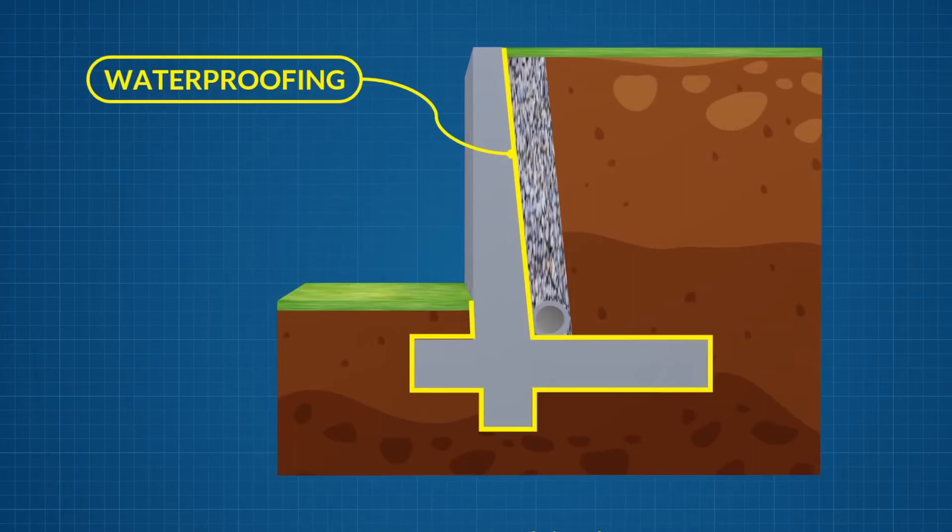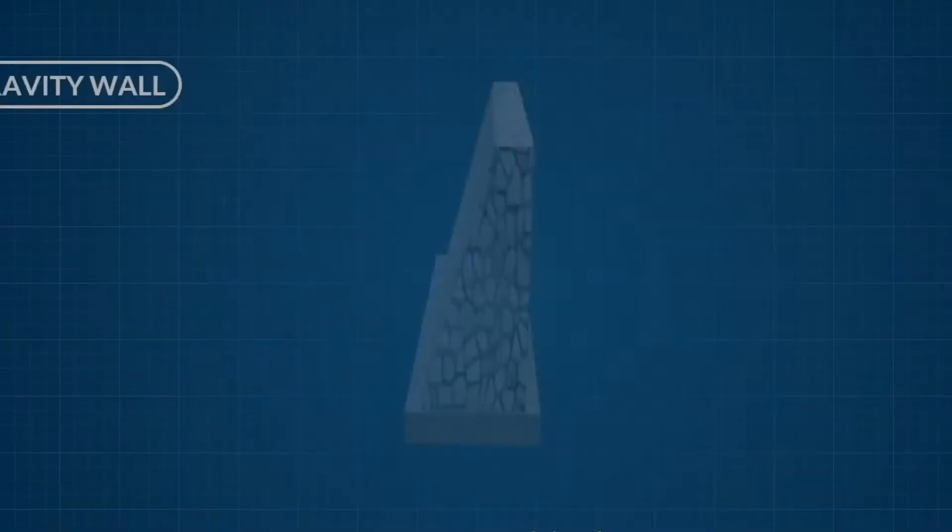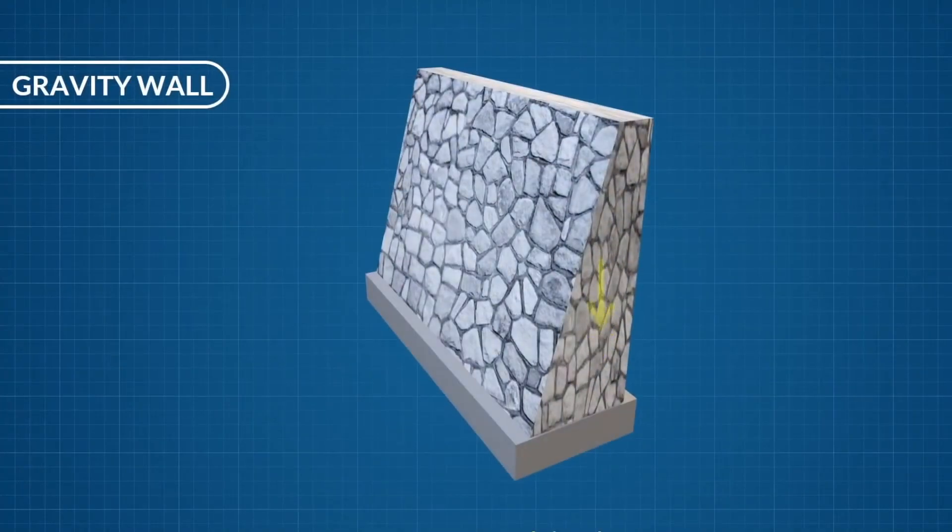Let's consider two of the most common types of retaining wall. Gravity walls resist earth pressure via the self-weight of the wall alone. Typically these walls are constructed from stone masonry.